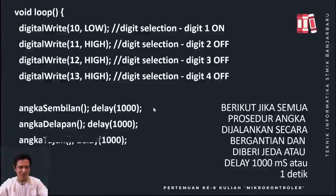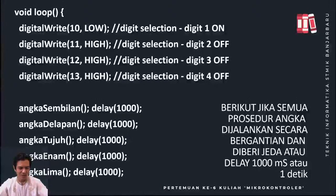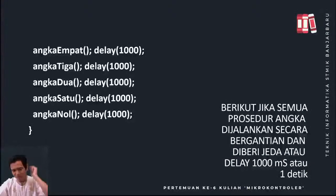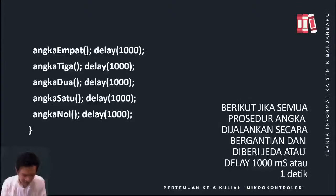Waktu itu kita sudah memberi delay ya — di masing-masing, habis kita menampilkan, kita delay, kemudian kita ganti lagi angka 8, kita ganti angka 7, delay dan seterusnya sampai angka nol. Angka 0 itu, segmen yang menyala kalau tidak salah A, B, C, D, E, F, kecuali G — kecuali segmen yang tengah itu.